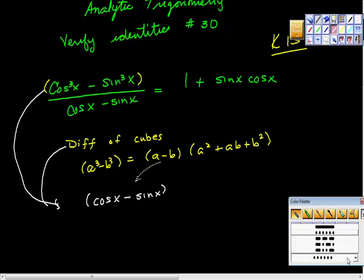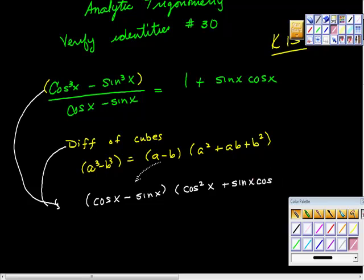And then I'm going to write this other piece right here, which is cosine squared x plus sine x cosine x plus sine squared x, right? And just to make the argument, that's this piece right here, isn't it? So using that formula is how I get to where I am here.